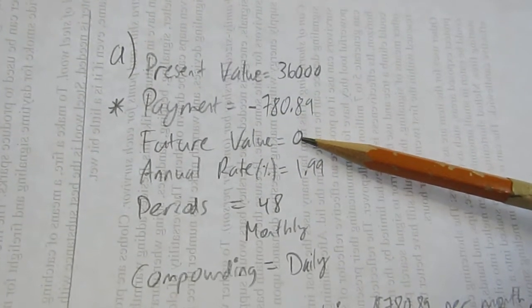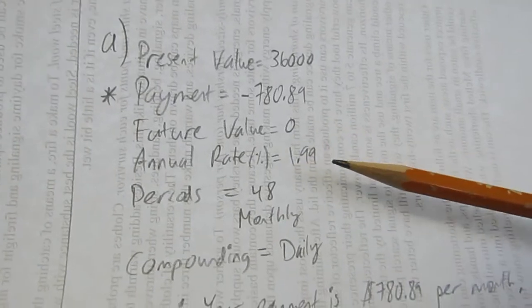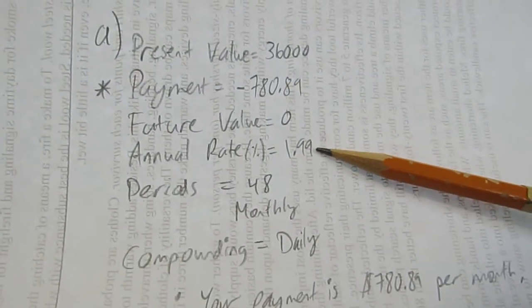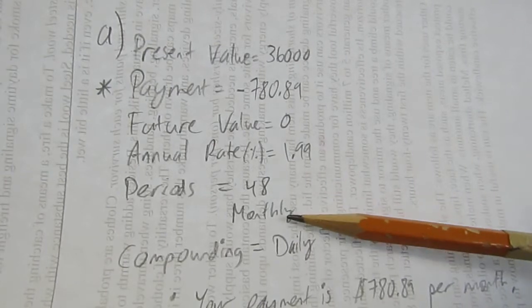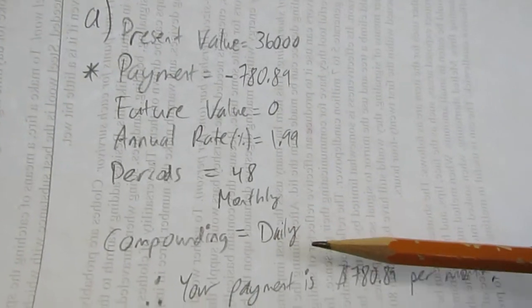Future value is always zero when you're paying off a loan. The annual interest rate was 1.99. It was 48 total months, being paid monthly. And the compounding was daily.